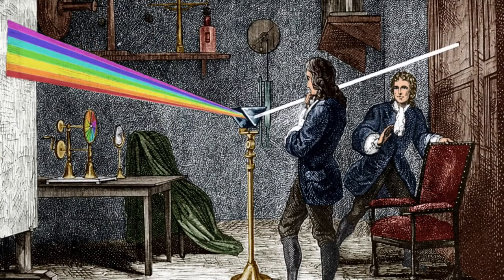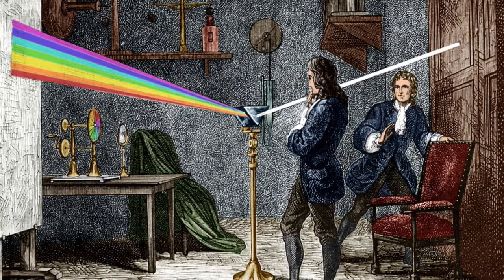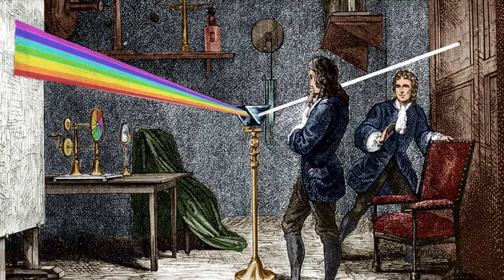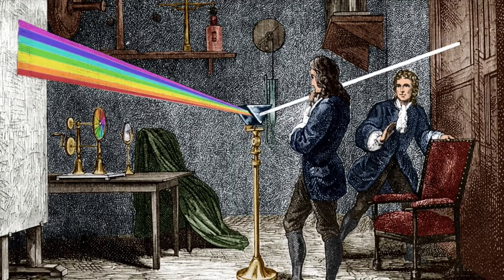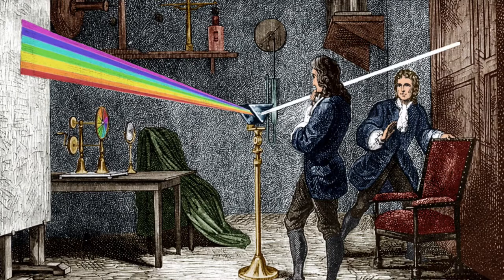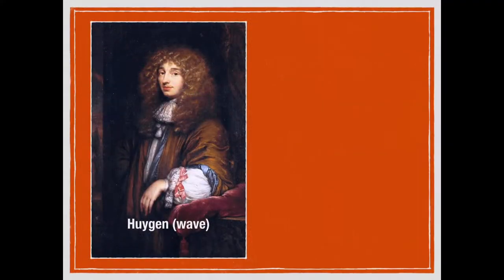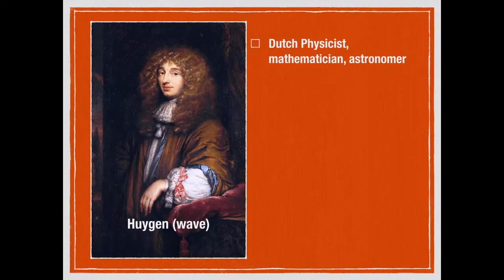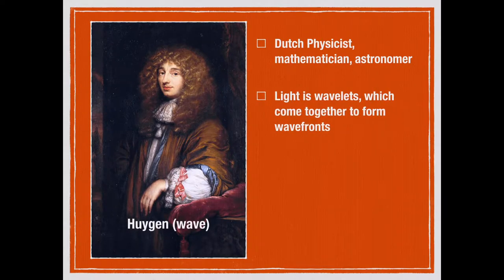Newton believed very strongly that light is a particle, and given that he was such an important scientist in the 17th to 18th century, no one really questioned him. At the same time, Christian Huygens, a relatively unknown Dutch mathematician, physicist and astronomer, published a paper on his theory that light is a wave, or wavefront.